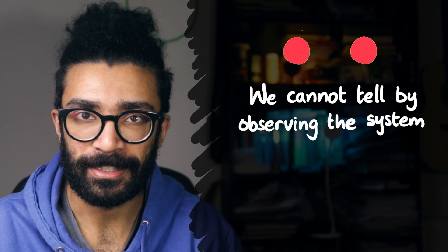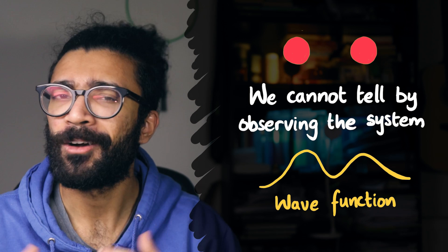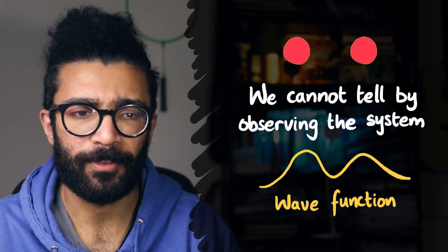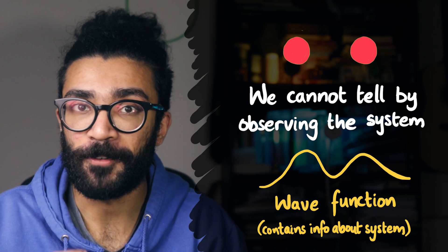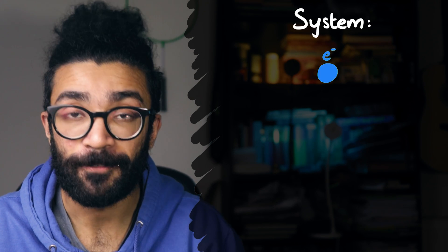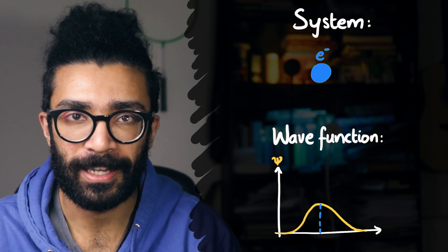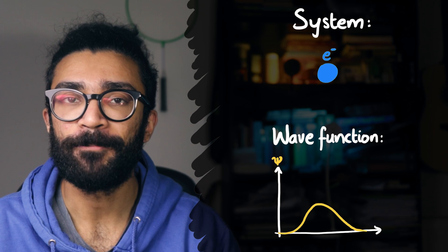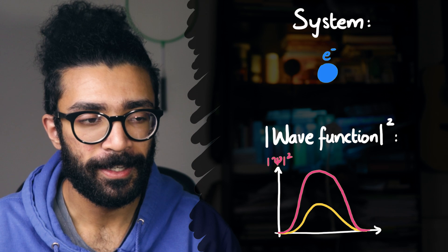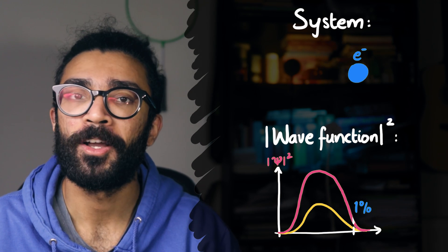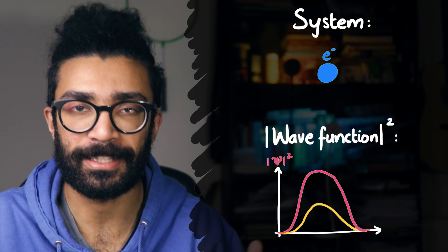We can understand the impact that this indistinguishability has by considering the wave function of any system we happen to be studying. Now, a wave function can basically be thought of as a mathematical function that contains all of the information that we know about our system. For example, if our system consists of just a single electron, then from the wave function of our system, we can calculate the probability of finding that electron at different points in space. Specifically, it turns out that if we square any wave function, technically we take its square modulus, then that is directly related to the probability of certain experimental results occurring when we make a measurement on our system, when we conduct an experiment on it.